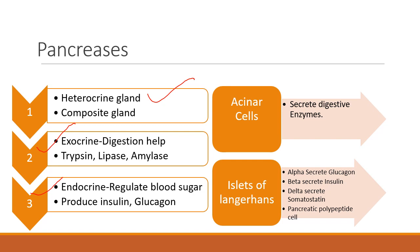What is exocrine and endocrine? Exocrine means that with the help of a duct — a duct means a tube — a chemical substance reaches the target organ. As an exocrine gland, the pancreas helps in digestion. There are trypsin, lipase, and amylase enzymes that help to break down the food. There are special cells present in the pancreas known as acinar cells that help to secrete these digestive enzymes.